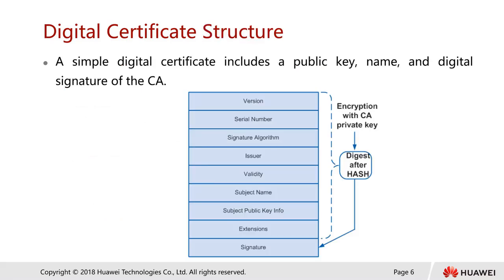Let's look at the digital certificate structure. If you're interested in seeing a real one, you can browse to any website where the URL shows HTTPS — for example in Google Chrome you can click on the lock symbol. A typical digital certificate includes a couple of things, including the public key, the subject name, and also the digital signature of a CA.